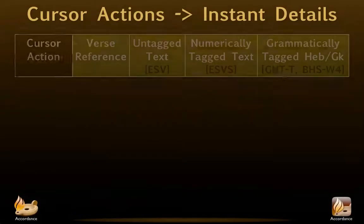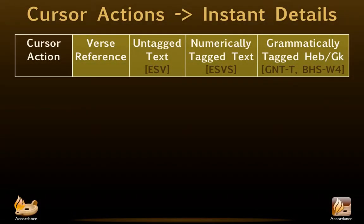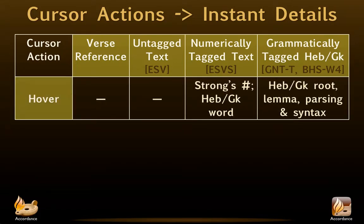Accordance offers users powerful tools to explore Bibles and texts. Take the cursor, for example. Hover over a word in one of our tagged texts, and information for that word appears in the Instant Details window. In the case of a numerically tagged text, it's the Strong's number and the original Hebrew or Greek word. In an original language text that's grammatically tagged, it's the root, lemma, full parsing, and, if you have the syntax modules installed, the syntax.